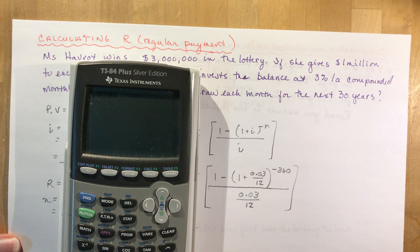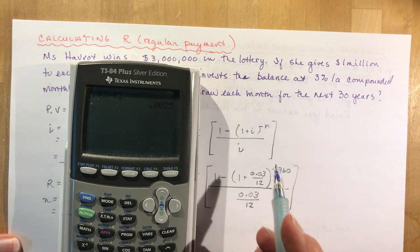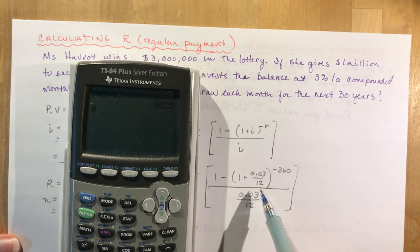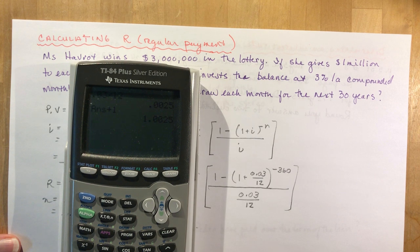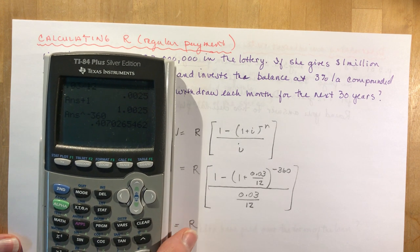I have 0.03 divided by 12, so that's my decimal 0.0025, well that's kind of a nice one. Add one to it. So I've got, raise it to the power of negative 360. And I want one minus that. So one minus second answer equals. So I have 0.59297.